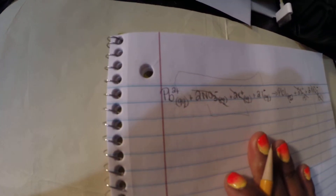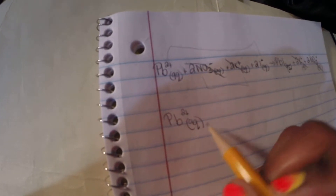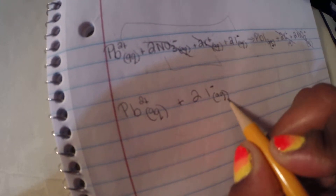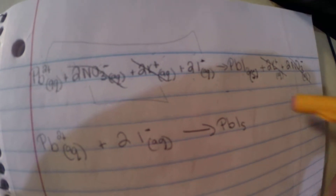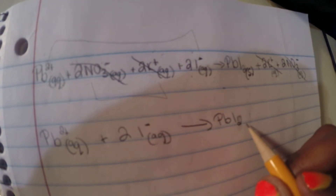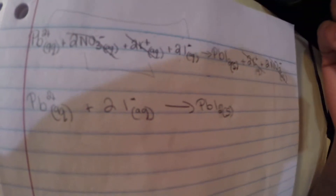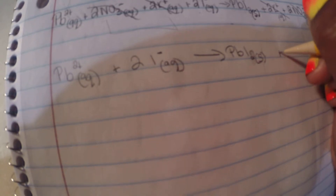Once you've cancelled out the spectator ions, rewrite your cleaned-up reaction. You have Pb²⁺(aq) plus 2I⁻(aq) yielding PbI₂(s). The lead and iodide ions are aqueous on the left, and lead iodide is the precipitate on the right. This is your net ionic equation.